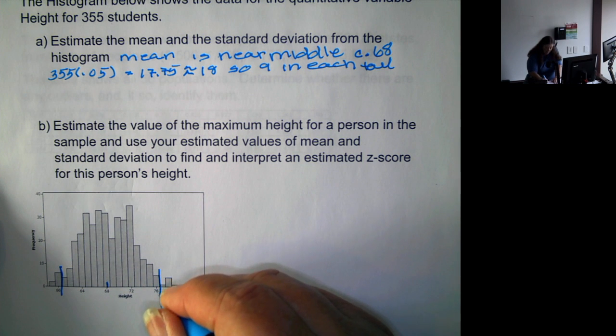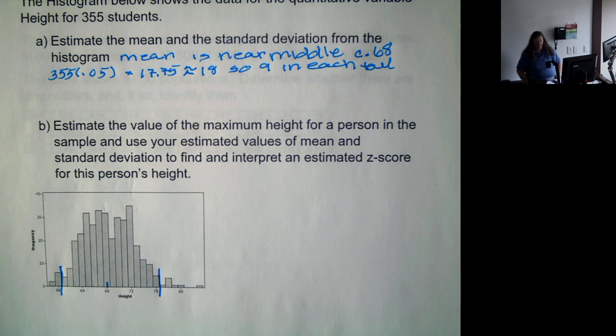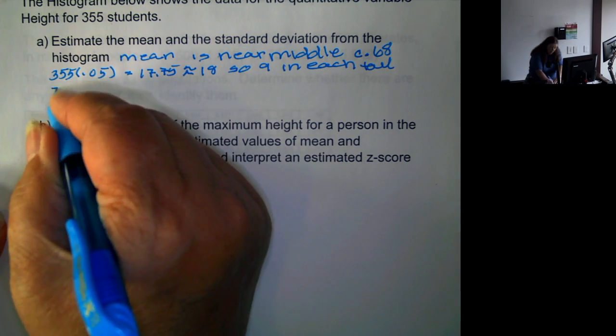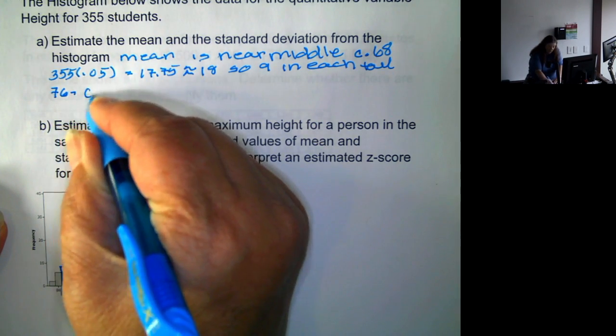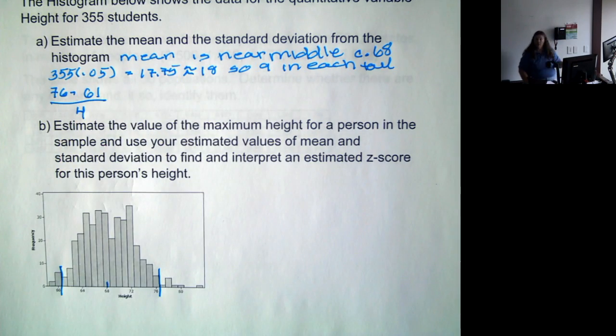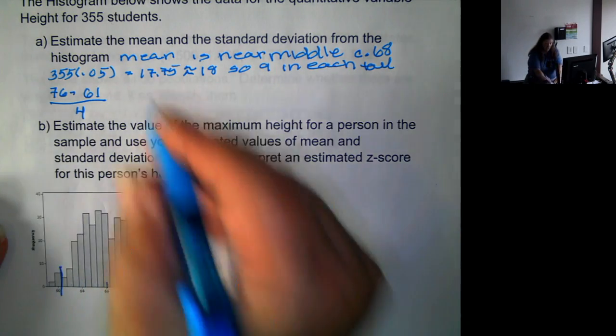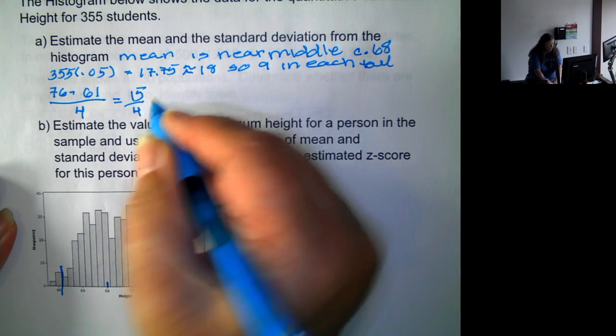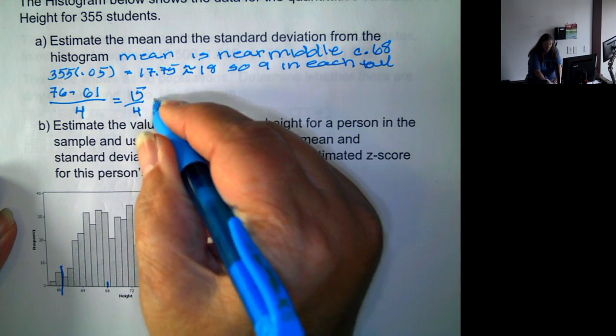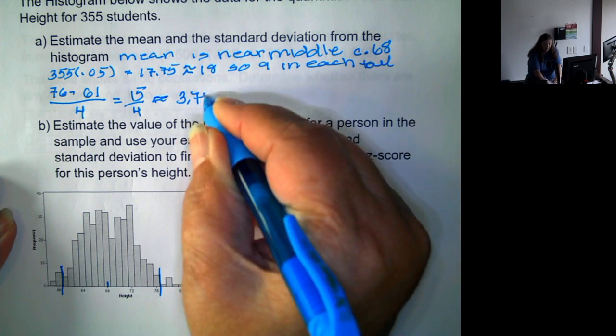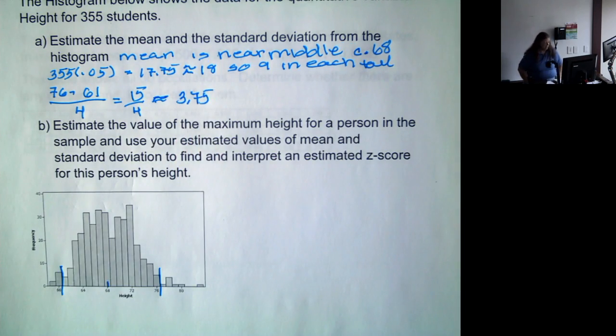So we have about 76 minus 61 over 4. And remember, we use 4 because it's plus or minus 2 standard deviations. That's 15 over 4, or 3.75, or we could use approximately 4.